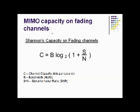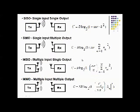Now we study MIMO's capacity on fading channels. Shannon's law defines the maximum rate at which error-free data can be transmitted over a given bandwidth in the presence of noise. This is expressed mathematically as follows, where C is the channel capacity in bits per second, B is the bandwidth in hertz, and S/N is the signal-to-noise ratio. Based on Shannon's law, a list of the capacity for different systems has been provided.